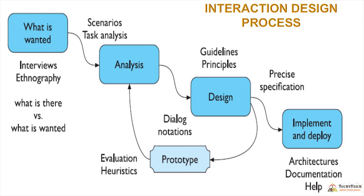Next we have to design by using principles — there are conditions and guidelines that guide how we design it. Next we have to implement it and deploy it, characterizing the specification using architecture diagrams, documentation, and help. We also have to design the prototype, select users, design it, and check it using dialogue notations. If we have the constraints, then we have to check and evaluate it.